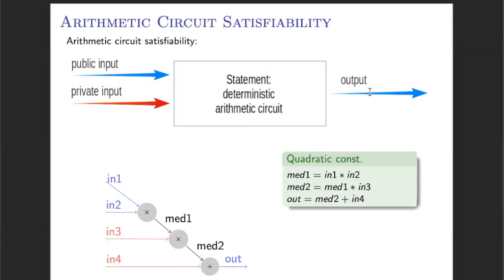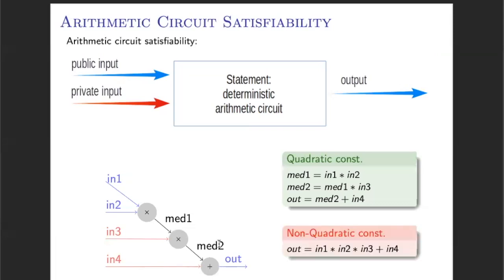But these constraint systems have some requirements. They can only use quadratic constraints in order to model the circuits. In this case, we are using two intermediate signals — intermediate signal 1 and intermediate signal 2 — in order to represent the intermediate values that may appear in the circuit. Other possible representations are not valid because they use a non-quadratic constraint that is not allowed in these Zero Knowledge protocols.